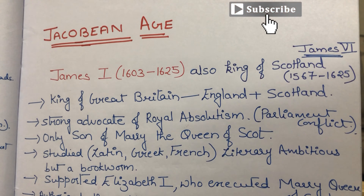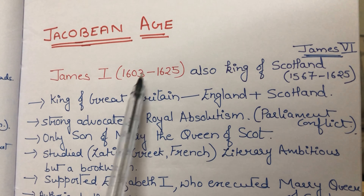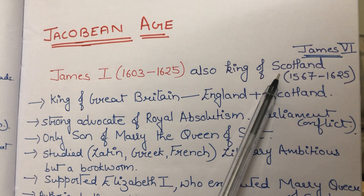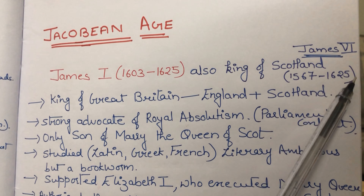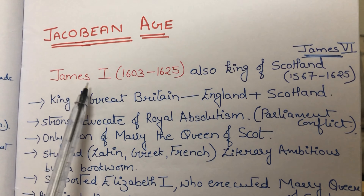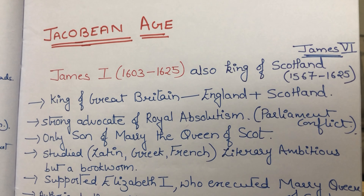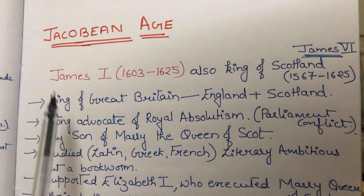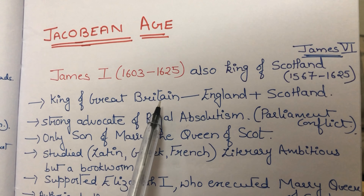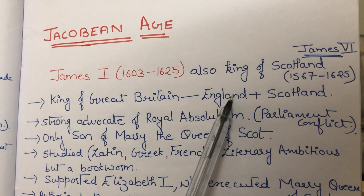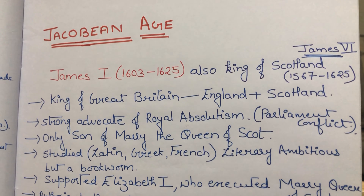James I ruled from 1603 to 1625 and this period is known as the Jacobean Age. He was also the king of Scotland from 1567 to 1625, where he was known as James VI. Because there was no prior ruler in England with that name, his name changed to James I to maintain chronological order. Now James I was the king of Great Britain, that is England plus Scotland.